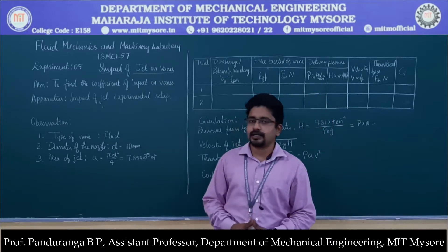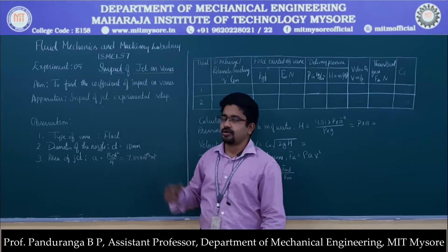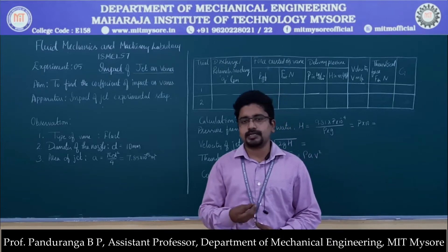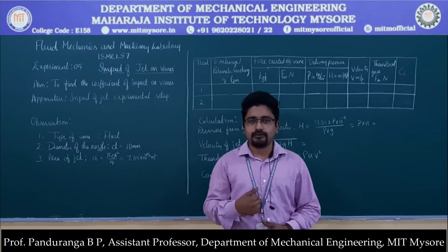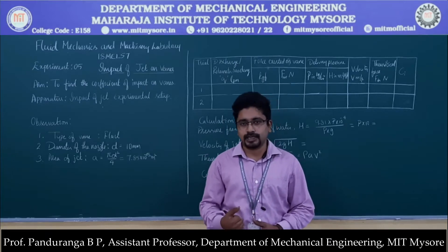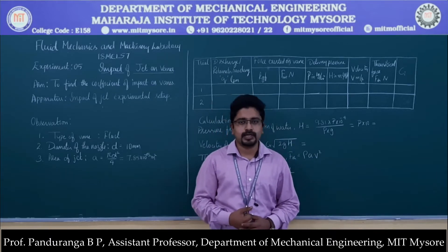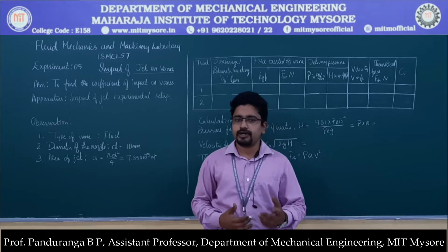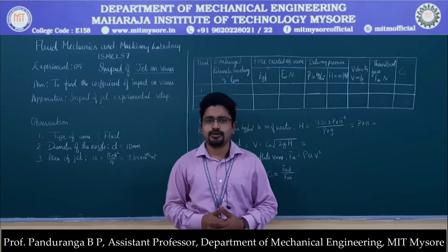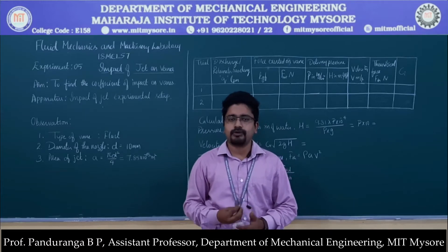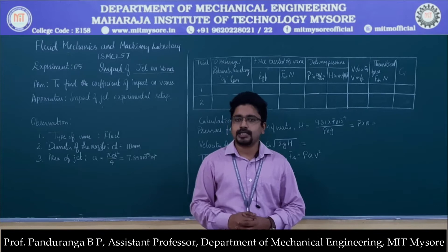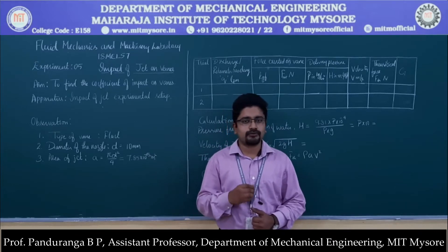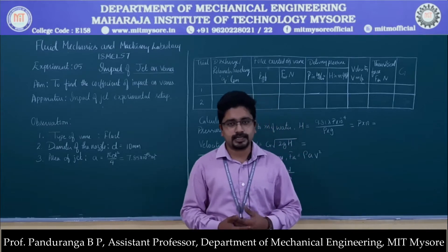In today's class, we have Experiment 5, which is impact of jet on vanes. In fluid mechanics, we have studied that whenever a jet strikes any surface, there will be a force created and we need to find out the amount of force exerted. We have a theoretical formula, but there will be a few losses when the fluid is flowing through the pipes and when it is coming out of the jet. So we need to consider those losses and multiply them to the theoretical equation to find out the actual force exerted on the vane by the jet.